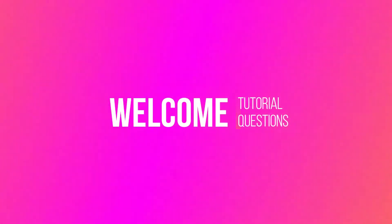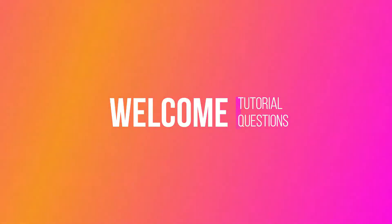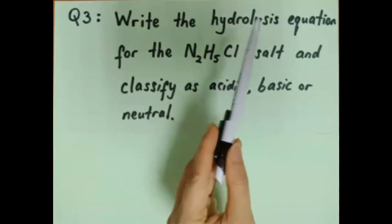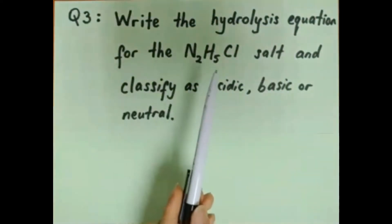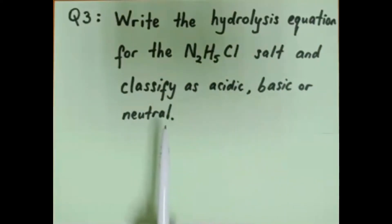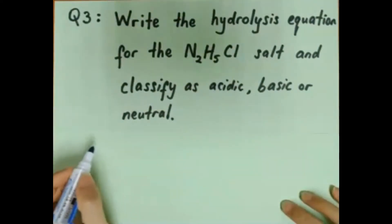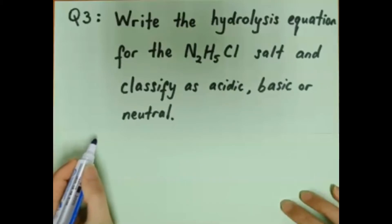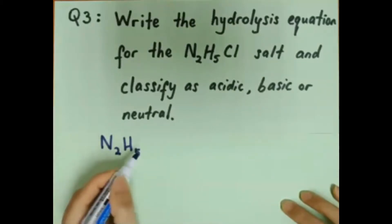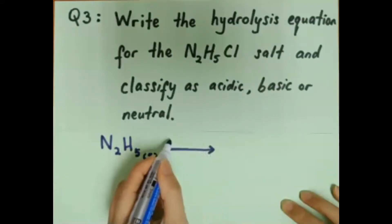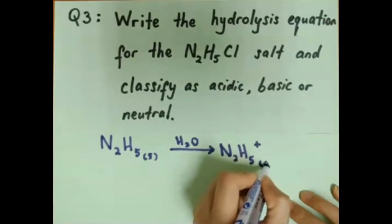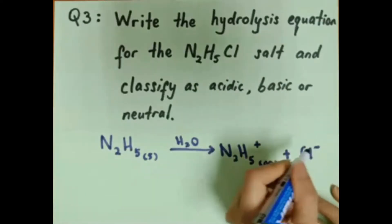Welcome back to discuss tutorial questions on Chapter 7. Question 3: write the hydrolysis equation for the N2H5Cl salt and classify it as acidic, basic, or neutral. First, write the equation of the salt dissolving in water to form cations and anions.